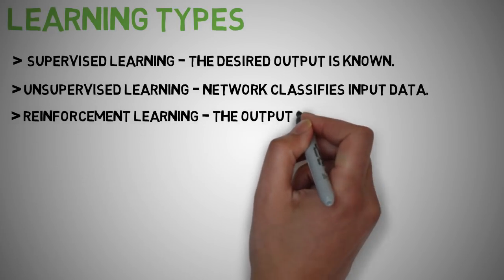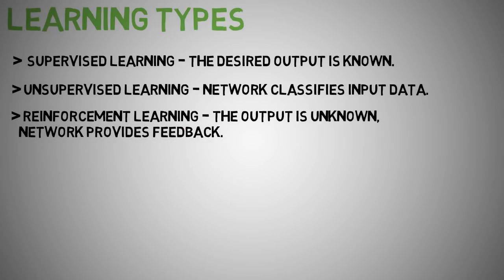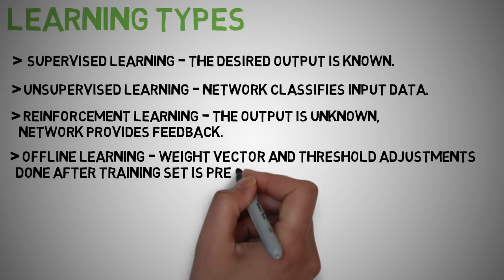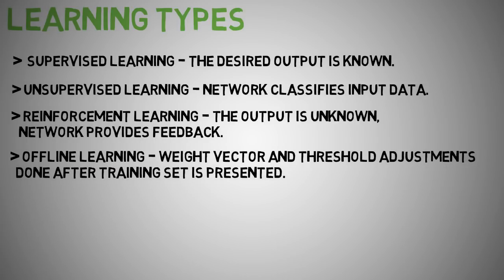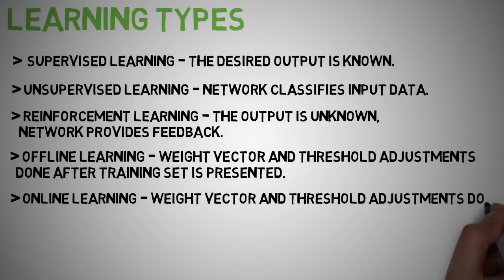Reinforcement learning, this is when the output is unknown, but the network provides feedback whether the input is right or wrong. It is a semi-supervised learning sort of. Offline learning, this is where the adjustment of the weight vectors and the threshold is done only after the training set is presented to the network. It is also known as batch learning. With online learning, the adjustment of the weights and threshold is done after presenting each training sample to the network.